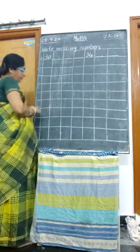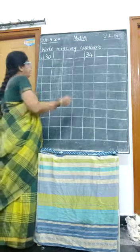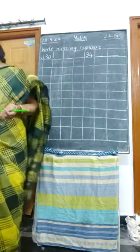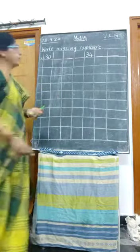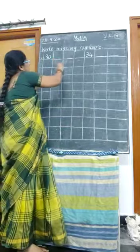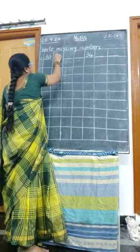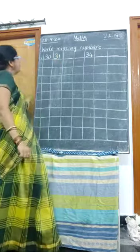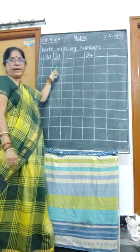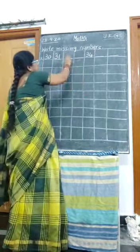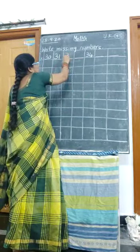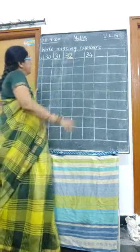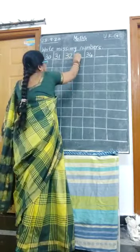Thirty after. Thirty after — thirty-one. Thirty-one. Thirty after thirty-one. What comes? Again, next dash now — thirty-two.